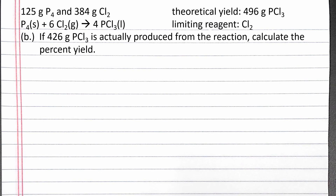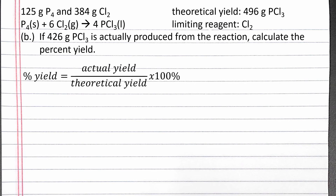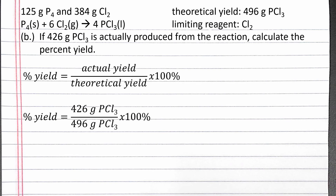Next we want to calculate percent yield. Our equation for percent yield is actual yield divided by theoretical yield times 100%. We're told when the reaction is performed, 426 grams of PCl3 is actually produced — this is the actual yield. We calculated the theoretical yield in Part A, which is 496 grams of PCl3. Completing the calculation, we get 85.9%.